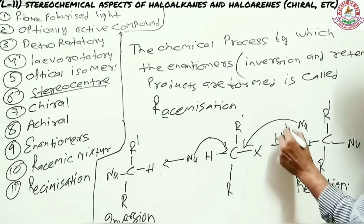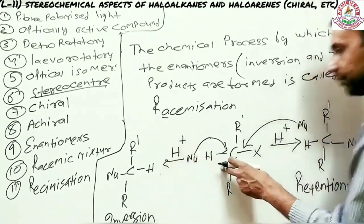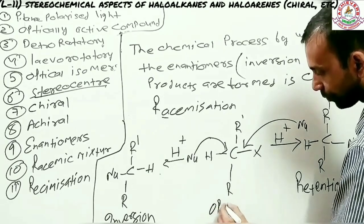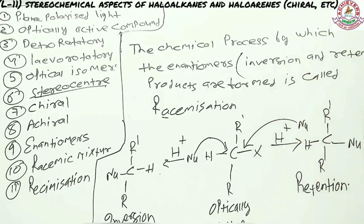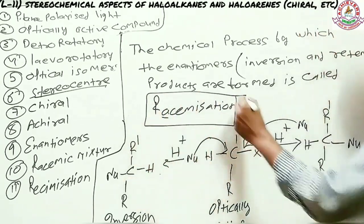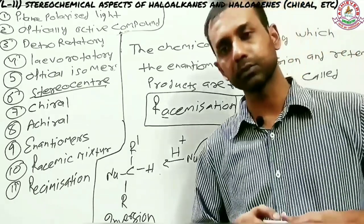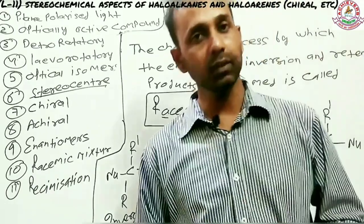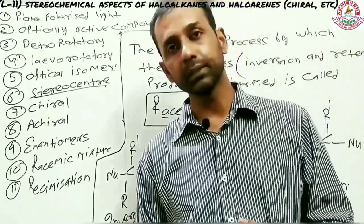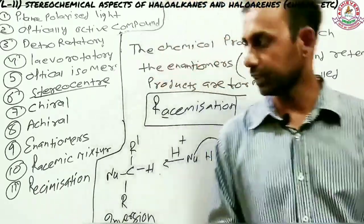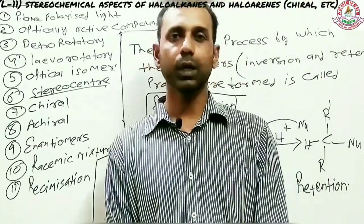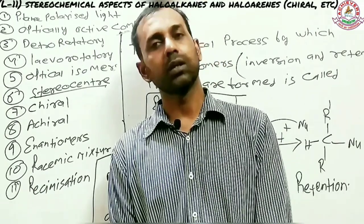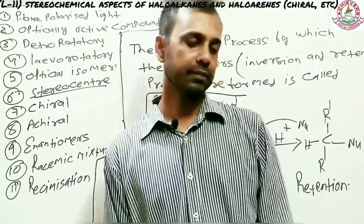If this reaction is carried out in presence of a polar protic solvent and the alkyl halide is optically active, it will form two products, and the process by which these two products are formed is called racemization. I've now reached the end of the stereochemical aspect of nucleophilic substitution. I'm very close to completing the Haloalkanes and Haloarenes chapter — thanks for watching, and subscribe so I can help you out!